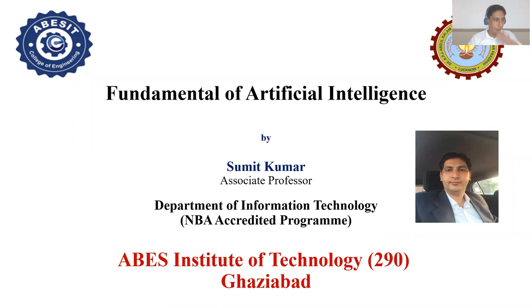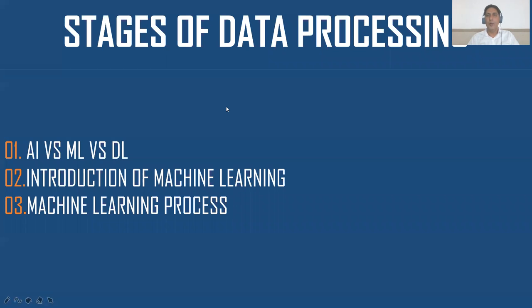Today we will discuss about data processing — specifically the stages of data processing. There are seven stages in data processing. Before discussing data processing, we will first know about artificial intelligence, machine learning, and deep learning.